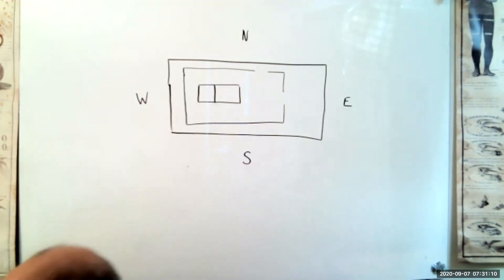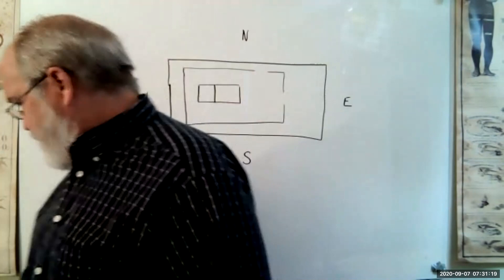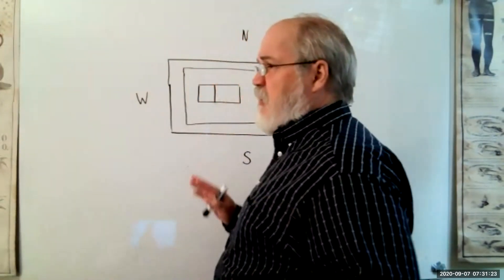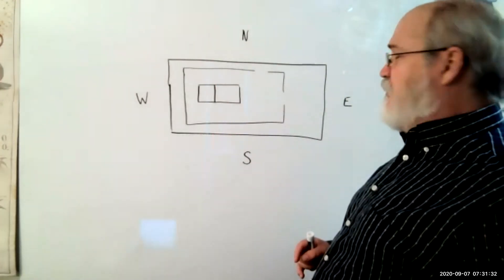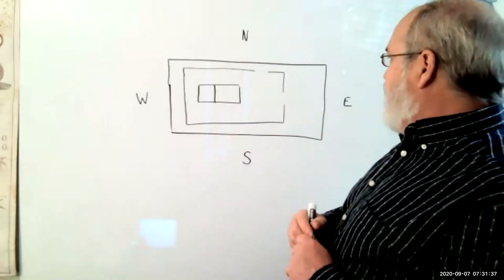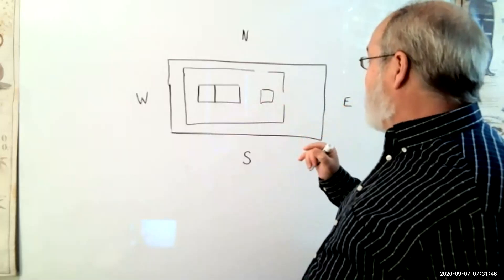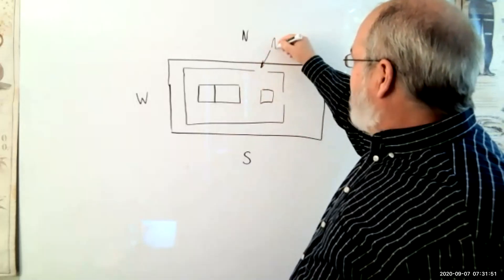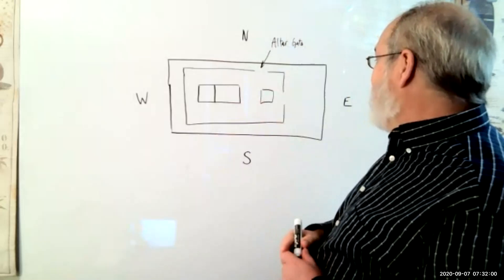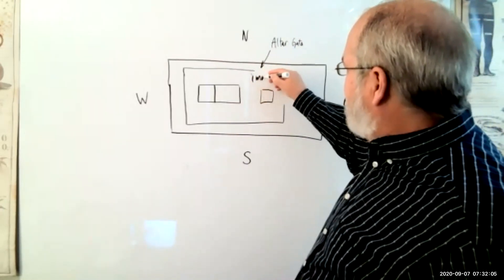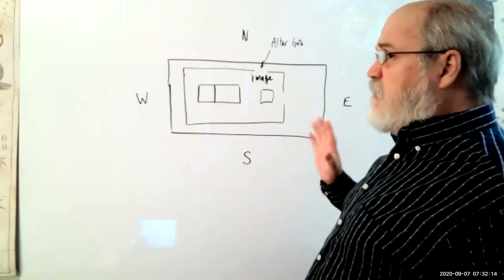Good morning. We're going to continue to study in Ezekiel chapter 8. Just to finish off where we were last time, I redrew a drawing of the sanctuary — this is obviously a very rough drawing of Solomon's Temple. We talked about the brazen altar, and there is this gate at the north called the altar gate, where the animals would be brought in to be slaughtered. And we know that there's this image of jealousy by this gate.